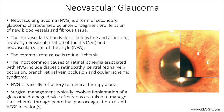Neovascular glaucoma, or NVG, presents as a secondary open angle or secondary closed angle glaucoma, depending on the extent of fibrovascularization and synechiae formation in the drainage angle. The abnormal vessels form in response to ischemia of the retina and are composed of highly permeable thin walls, lacking a muscular layer or normal adventitia, with absence of tight intercellular junctions. Aqueous outflow is compromised by the fibrovascularization with or without synechiae formation.